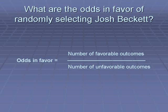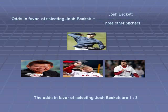Now we need to ask: what are the odds in favor of randomly selecting Josh Beckett? Odds is a little bit different. The odds in favor is the number of favorable outcomes over the number of unfavorable outcomes. The odds in favor would be one Josh Beckett in the numerator, and notice Josh Beckett is gone from the denominator. So the odds in favor of selecting Josh Beckett would be one to three, compared to the probability of one to four.